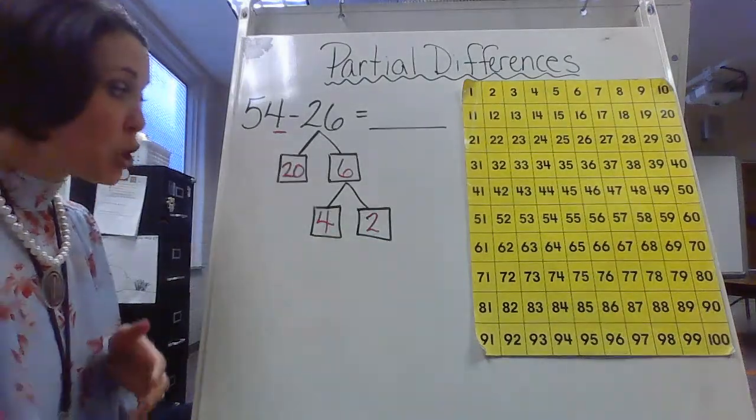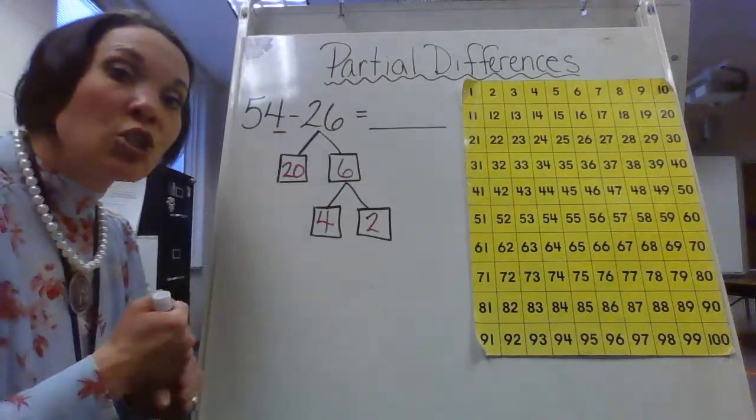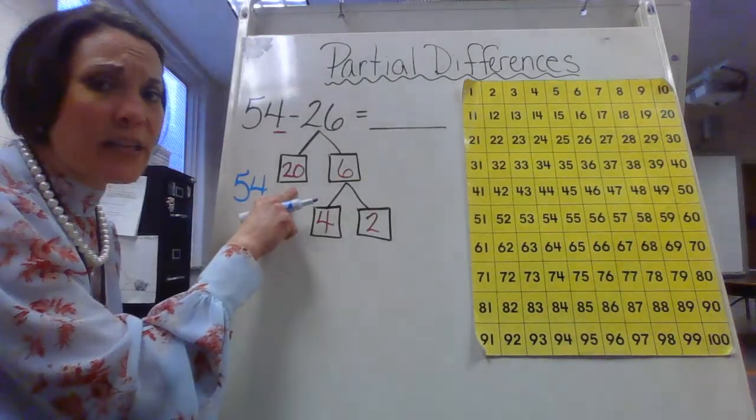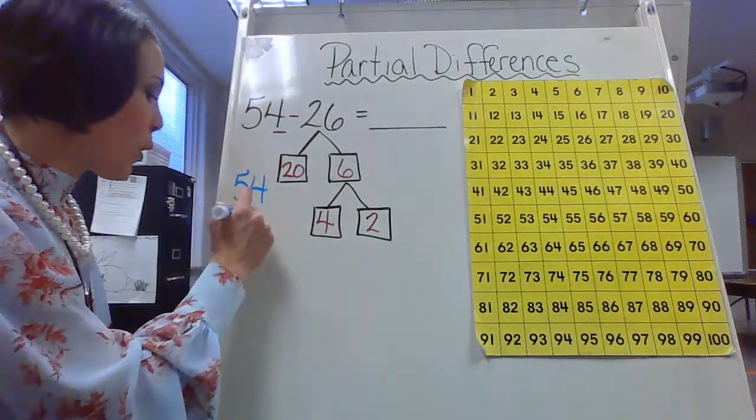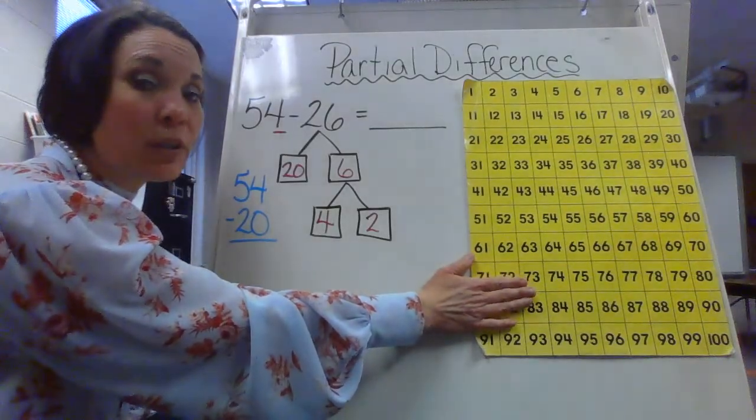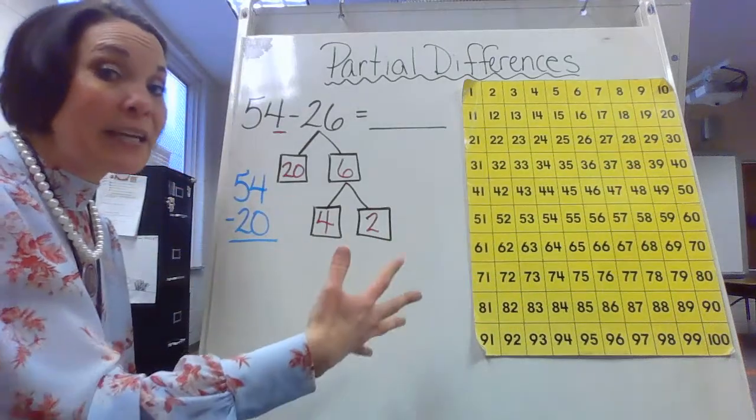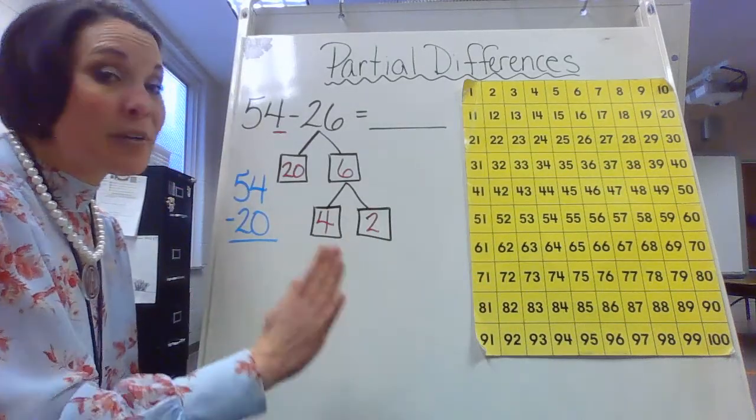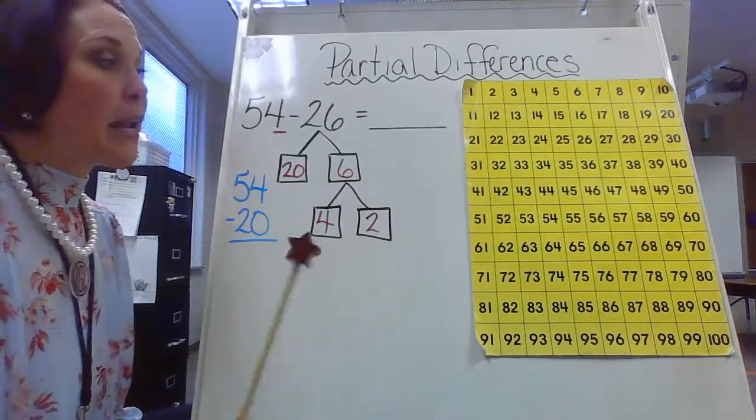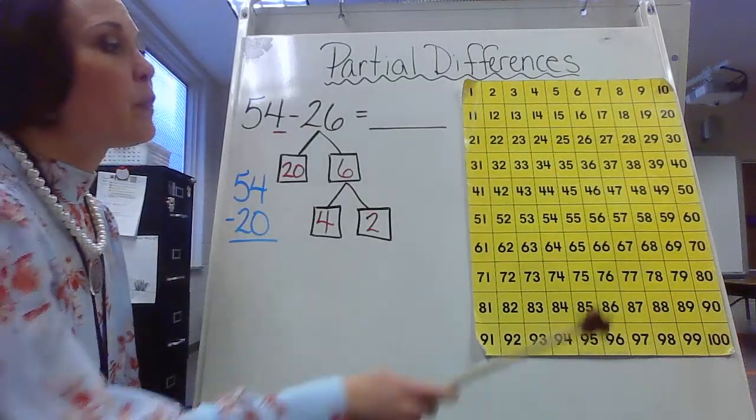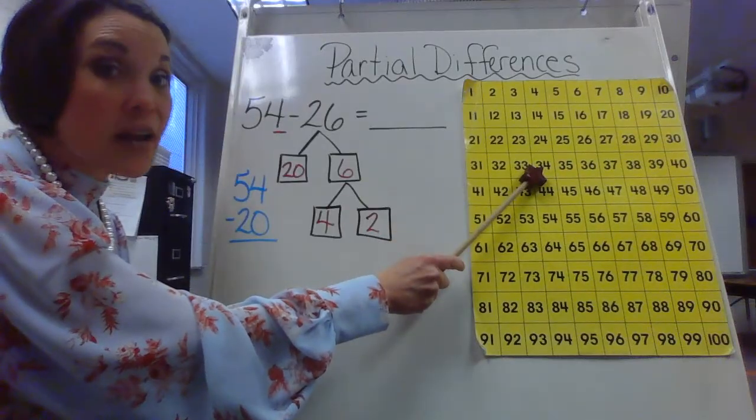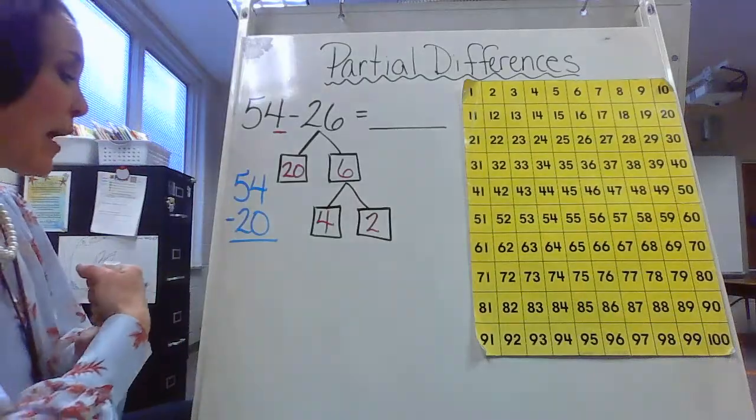So now what I want to do, I want to go ahead and start the subtraction process. So if I'm at 54, I want to start with my tens. I'm going to start taking away my tens, so I want to take away my 20. And I have my chart here as just an extra little added bonus to kind of help and guide me through these mental math strategies. So I'm at 54 and I want to take away 20. So 54, I'm taking away two tens: one, two. Where am I at? 34. So that's going to be my answer.